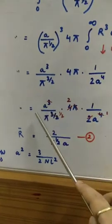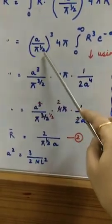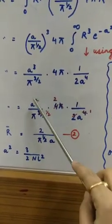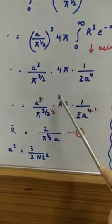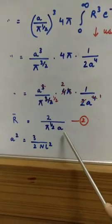Now we have to solve this, that it was like a cube pi 3 by 2, 4 pi and the solution of this was 1 upon 2a⁴ and likewise we are solving this. After solution, we are getting 2 upon pi to the power half a.